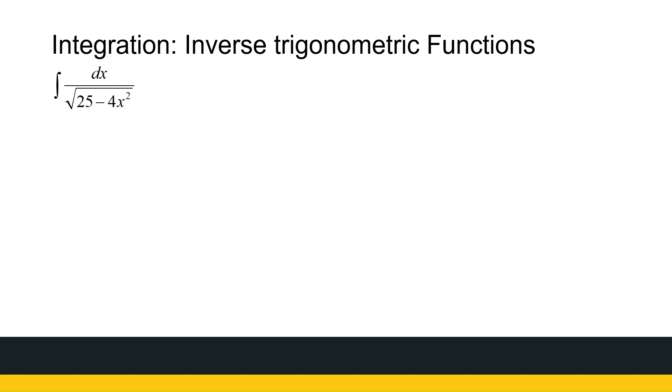All right, the next example. Now the numbers are getting a bit messy. We know from our standard one, the integral of 1 over the root of 1 minus x squared dx is arc sine x plus c. This one has some familiarity. It looks a little bit the same, but there's way too many numbers playing around there. So we're going to have to figure out what to do with these numbers.